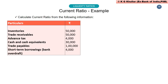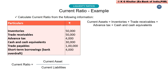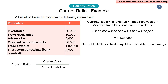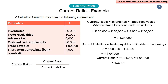Let us solve a practical example to calculate current ratio. Current ratio equals current assets divided by current liabilities. Current assets are inventories plus trade receivables plus advance tax plus cash and cash equivalents: Rs. 50,000 + 50,000 + 4,000 + 30,000 = Rs. 1,34,000. Current liabilities are trade payables plus short-term borrowings: Rs. 1,00,000 + 4,000 = Rs. 1,04,000. So current ratio = Rs. 1,34,000 ÷ Rs. 1,04,000 = 1.29:1.